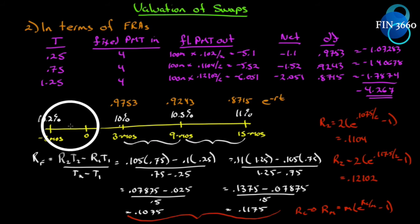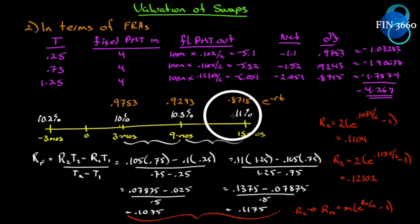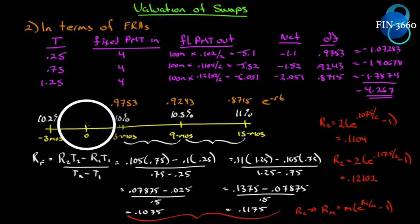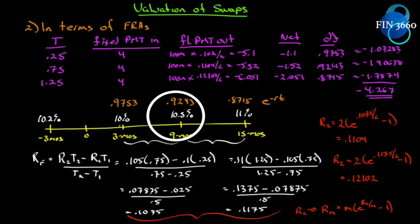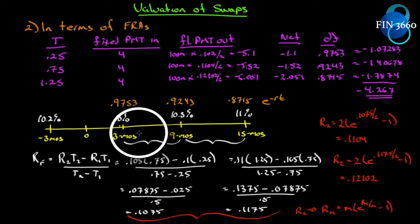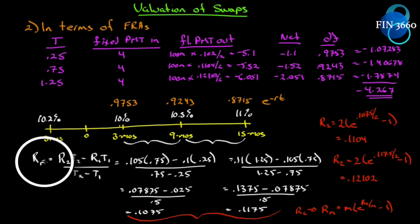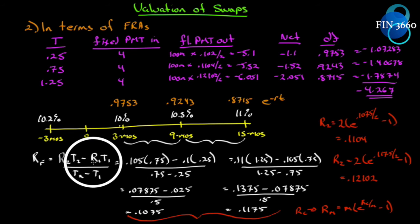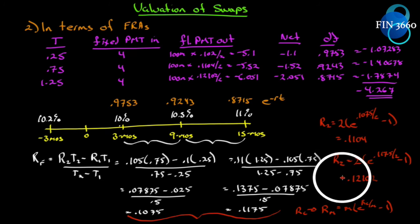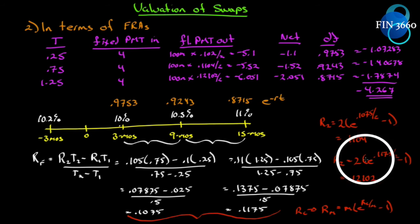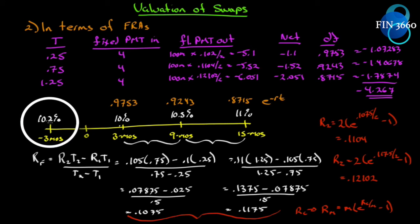All this method does is calculate the forward rate between each period. The zero rates represent the rate from time zero out to each expiration date. Since the 10.5% rate represents the full time period, we only want the sub-period rate — which is why we need the forward rate. We'll end up with a rate that isn't quite useful until we convert it into the periodicity we need.